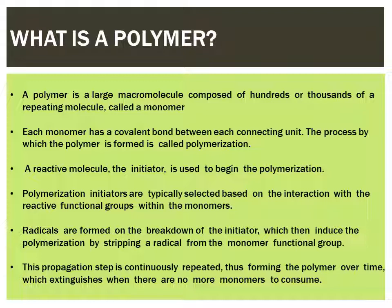What is a covalent bond? A covalent bond is actually the sharing of electrons between two atoms. In the process of polymerization, there is another agent called an initiator — a reactive molecule — that helps in beginning the process of polymerization. Polymerization initiators are typically selected based on the interaction with the reactive functional groups within the monomers. Radicals are formed on the breakdown of this initiator, which then induce polymerization by stripping a radical from the monomer functional group. Therefore, this particular type is called free radical polymerization. In fact, most contact lens polymer matrices are made by free radical polymerization.